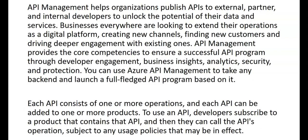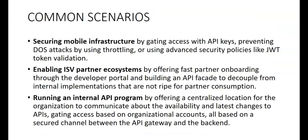Common scenarios associated with Azure API Management include: securing mobile infrastructure by gating access with API keys, preventing DOS attacks by using throttling or advanced security policies like JWT token validation, enabling ISV partner ecosystems by offering fast partner onboarding through the developer portal, and building an API facade to decouple from internal implementations not suitable for partner consumption. You can also run an internal API program by offering a centralized location to communicate about API availability and latest changes, with access based on organizational accounts over a secure channel between the API gateway and backend.